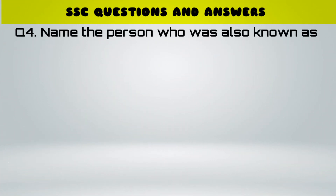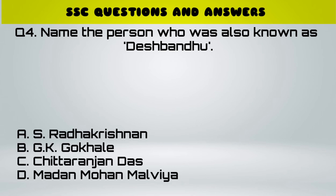Question number 4. Name the person who was also known as Deshbandhu. A. S. Radhakrishnan, B. G.K. Gokhale, C. Chittaranjan Das, D. Madan Mohan Malviya. Answer: C. Chittaranjan Das.